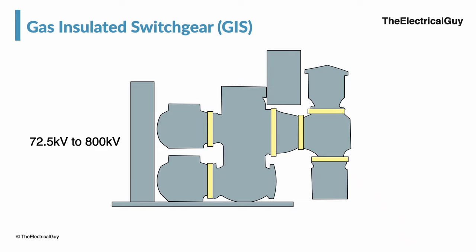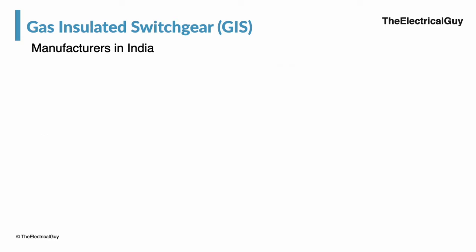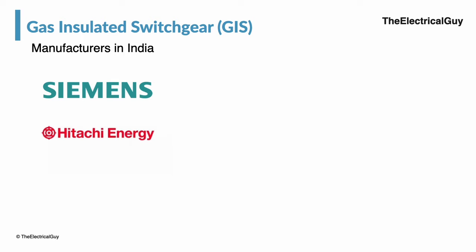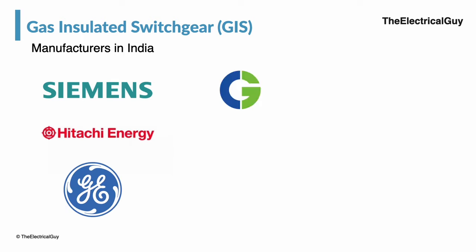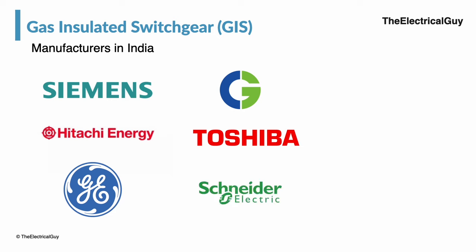In India there are many manufacturers of GIS technology, including Siemens, Hitachi Energy, General Electric, Crompton Greaves, Toshiba, Schneider Electric, and Huesen. If you know any other manufacturer, do let us know via the comment section below.